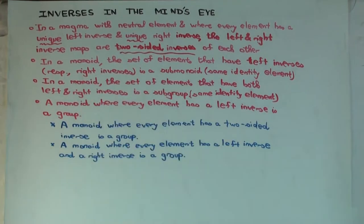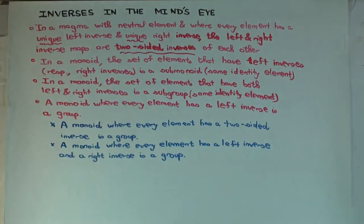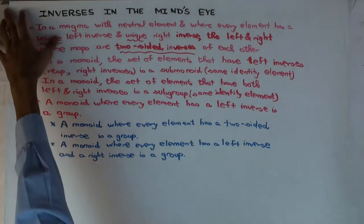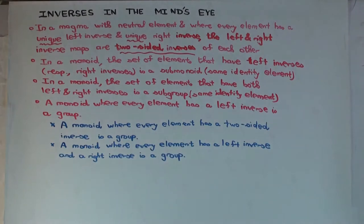We've seen an example where you have elements which have left inverses but don't have right inverses. So the naive hope — that maybe we can prove that if an element has a left inverse it also has a right inverse, and therefore they're equal, and then you get a group — that doesn't work simply as that. So how do you get around that problem?